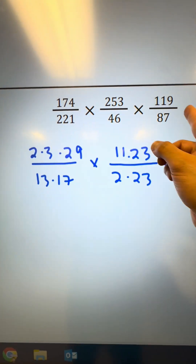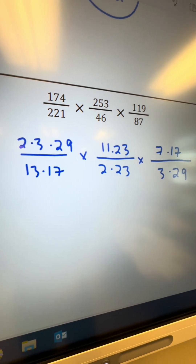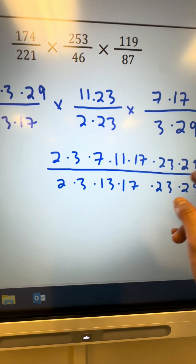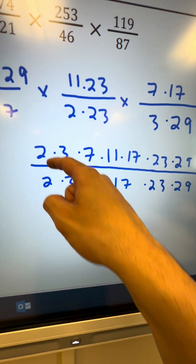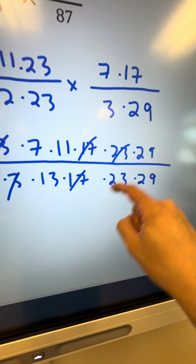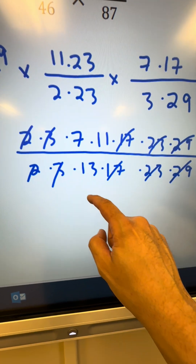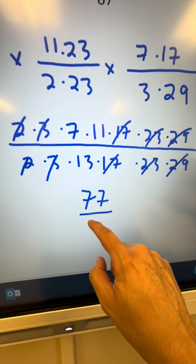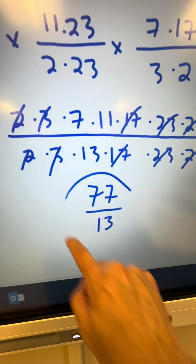So I replaced all the original numbers with their prime factorizations and organized everything into one single fraction, least to greatest. Now start eliminating common factors: a pair of 17s, a pair of 23s, and a pair of 29s. What I have left is 7 times 11 on top, which is 77, and only a 13 on the bottom. So 77 over 13 is my final answer.